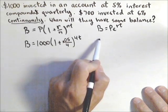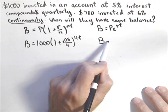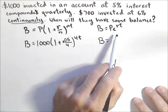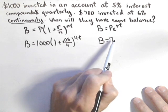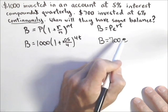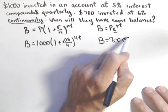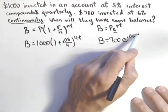For compounding continuously, we use a different formula, sometimes called the PERT formula. It's actually simplified because we don't have to worry about the number of compounding periods. So we have $700 times E, that's always going to be part of the formula, raised to the 0.06T.